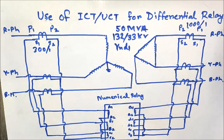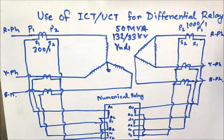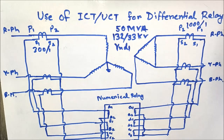Hello friends, today I will discuss the use of ICT, that is Interposing Current Transformer, or UCT, that is Universal Auxiliary Current Transformer, for differential protection relay. It is mainly used for static relay; it is not used in case of numerical relay.